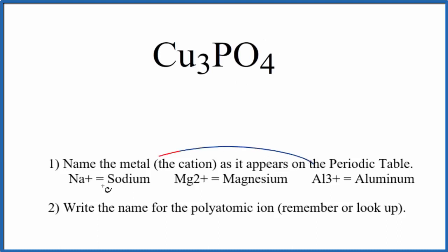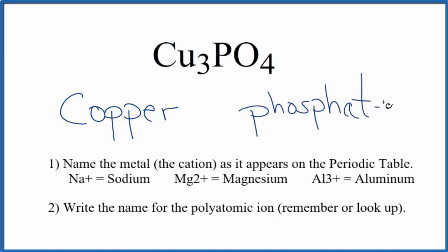This is an ionic compound, so we're going to use these rules to write the name for Cu3PO4. We first write the name of the metal, that's the copper. Then we write the name of the polyatomic ion, that's the phosphate here, lowercase p. And so far we have copper phosphate is the name for Cu3PO4,